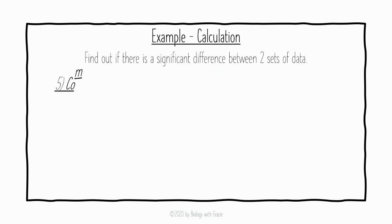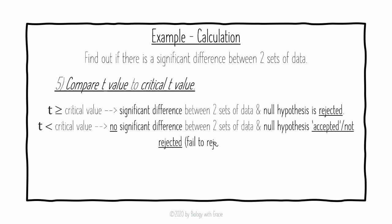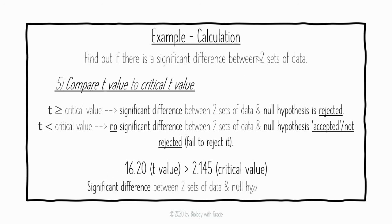The final step is to determine whether there is a significant difference by comparing our t value to the critical t value. If t is greater than or equal to the critical value, there is a significant difference and we can reject the null hypothesis. If t is less than the critical value, there is no significant difference and the null hypothesis cannot be rejected. Our t value of 16.20 is greater than the critical value of 2.145, so there is a significant difference and we reject the null hypothesis.